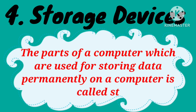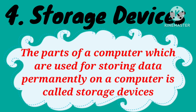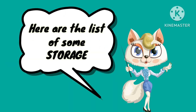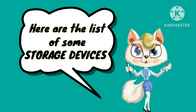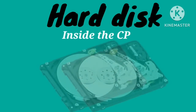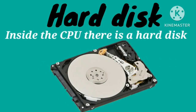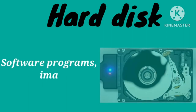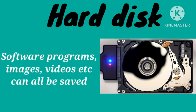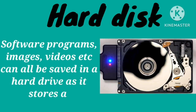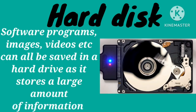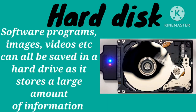Number four, storage devices. The parts of a computer which are used for storing data are called storage devices. Here is the list of some storage devices. Hard disk: inside the CPU there is a hard disk. Software programs, images, videos, etc. can all be saved in a hard drive as it stores a large amount of information.